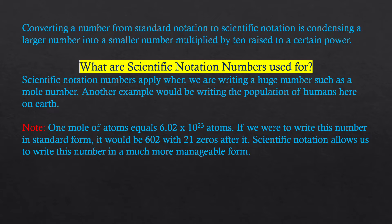What are scientific notation numbers used for? Scientific notation applies when we are writing a huge number such as a mole number. Another example would be writing the population of humans here on Earth. One mole of atoms equals 6.0 times 10 to the 23rd power atoms. If we were to write this number in standard form it would be 602 with 21 zeros after it.